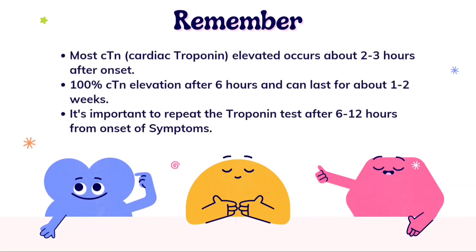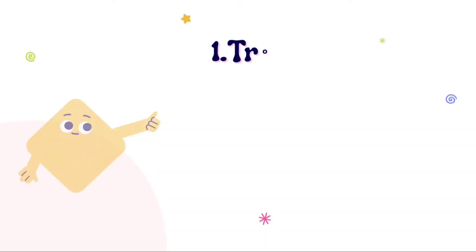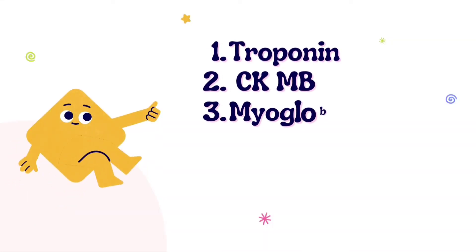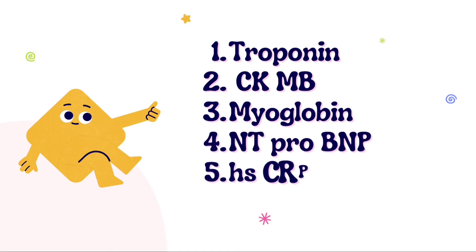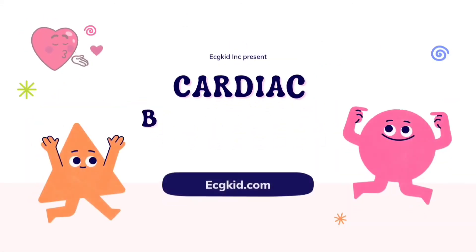100% cardiac troponin elevation is seen after six hours, and can last for about one to two weeks. It is important to repeat the troponin test after six to twelve hours from onset of symptoms. Both troponin T and troponin I are elevated after two to three hours of onset of symptoms, so it is necessary to measure these markers before primary intervention — in clinical practice, along with CK-MB, lactate dehydrogenase, and AST levels, which will be discussed in the next topic.